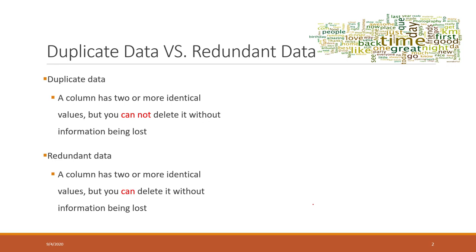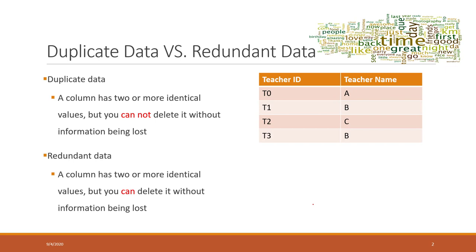For redundant data, if a column has two or more identical values but you can delete one of those values and still keep the information, then it is called redundant. We want to try to reduce redundancy. For example, in the teacher name column, if two teachers have the same name those are considered duplicate data, because if you delete one you won't know the name of the other teacher. That is considered duplicate data and you cannot delete those values.